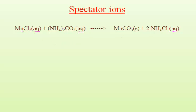The first reactant is manganese chloride. It is made up of manganese ions and chloride ions. Manganese ion has a plus 2 charge and chloride ion shows minus 1 charge. There is only one manganese atom in manganese chloride, so it produces one manganese ion. There are two chlorine atoms in manganese chloride, so it produces two chloride ions.